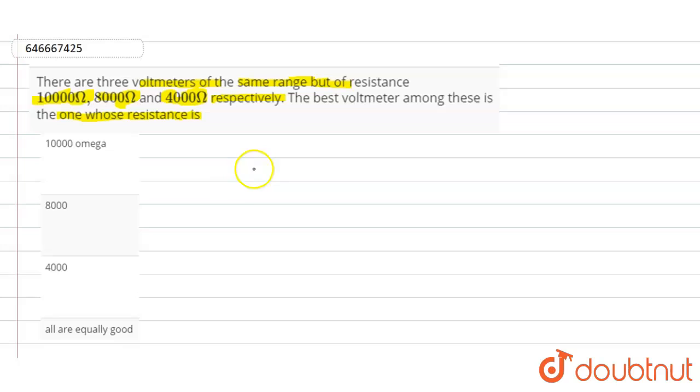As we know that the current or the electrons will always pass through the low resistance path only. Okay, so according to that we will say: more the resistance...